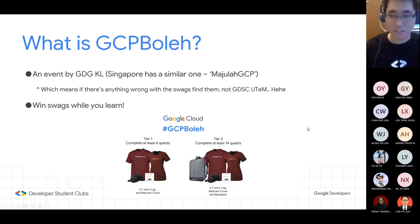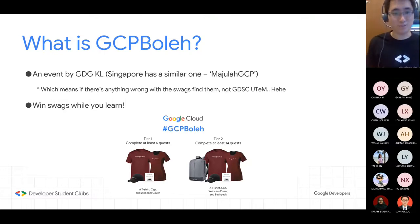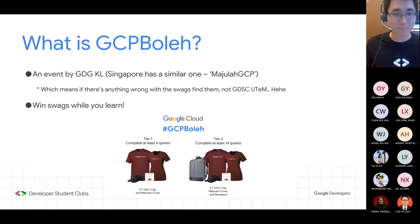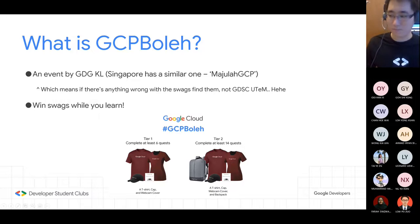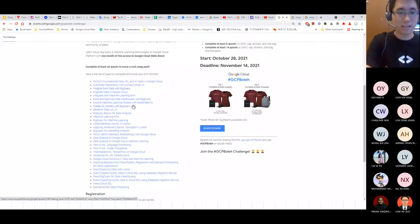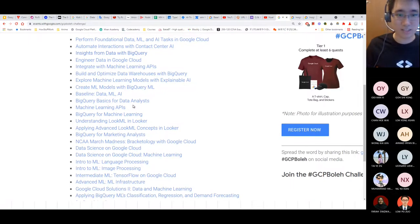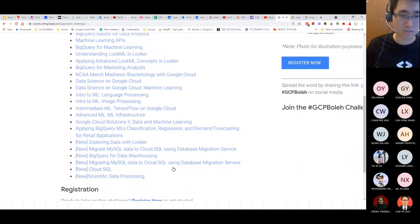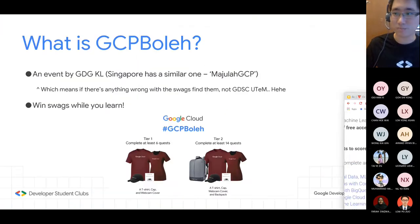So what is GCP Boleh? It's an event by GDGKL, as our MC said. Singapore has a similar one called Majula GCP. Because this is an event by GDGKL, if you have problems with the swag claim, find GDGKL on Facebook — don't find us. The main benefit about GCP Boleh is that you win swag as you learn through the quests, which are mainly about AI, data exploratory, TensorFlow, image processing, and SQL.